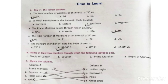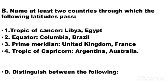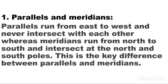Now let us move to section D: distinguish between the following. Number 1 is Parallels and Meridians. Parallels run from East to West and never intersect with each other, whereas Meridians run from North to South and intersect at North and South Poles. This is the key difference between Parallels and Meridians.